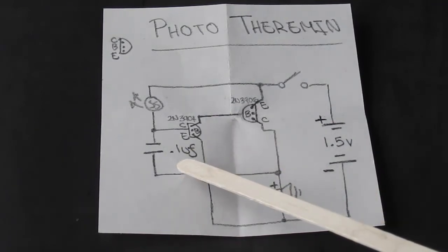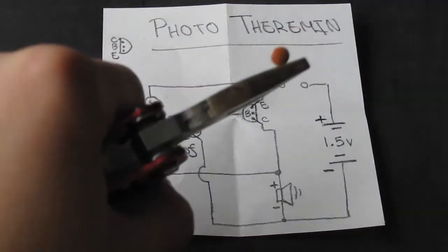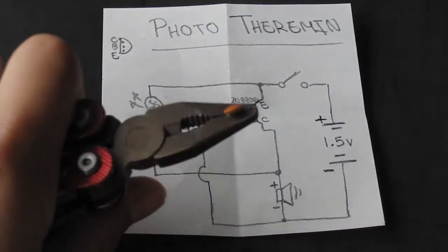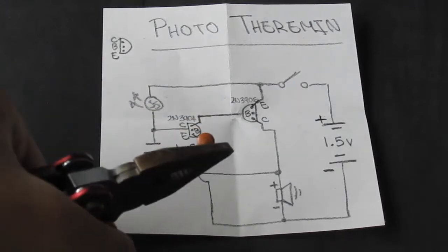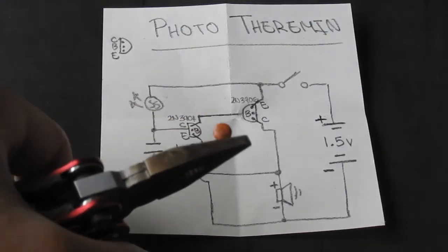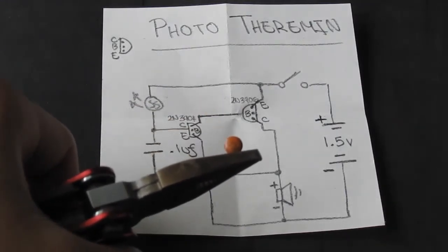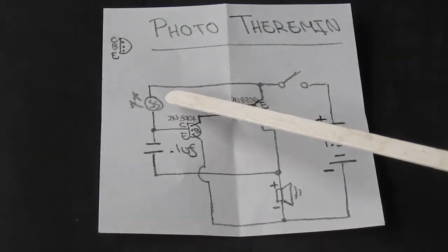Here will be the 0.1 UF ceramic capacitor. A ceramic capacitor is basically a small circle and it's pretty flat and it'll have the numbers 104 on it to indicate the 0.1 UF. And here is our photocell.